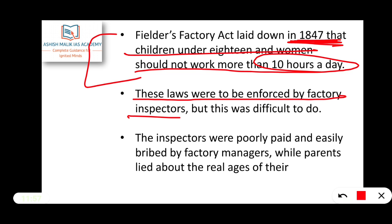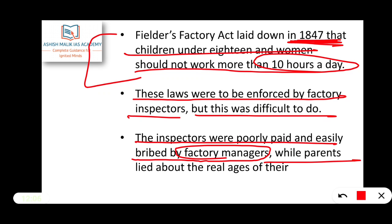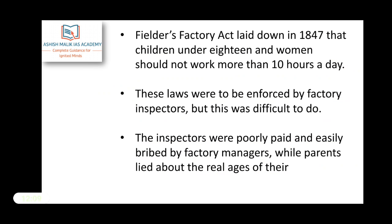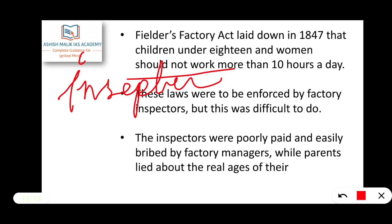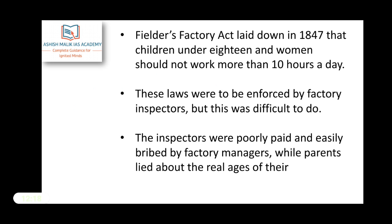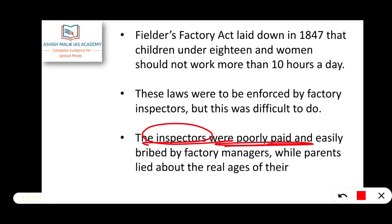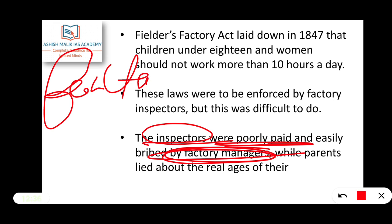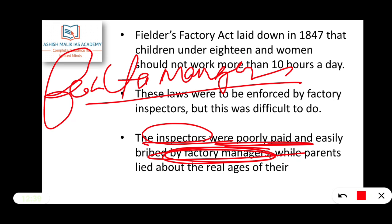The root of these laws was to be enforced by factory inspectors, but this was difficult to do. The inspectors were poorly paid and easily bribed by factory managers, while parents lied about the real ages of their children. The inspectors were supposed to enforce the rules at the ground level, but they were colluding with factory managers — this was the main root cause of continued exploitation.